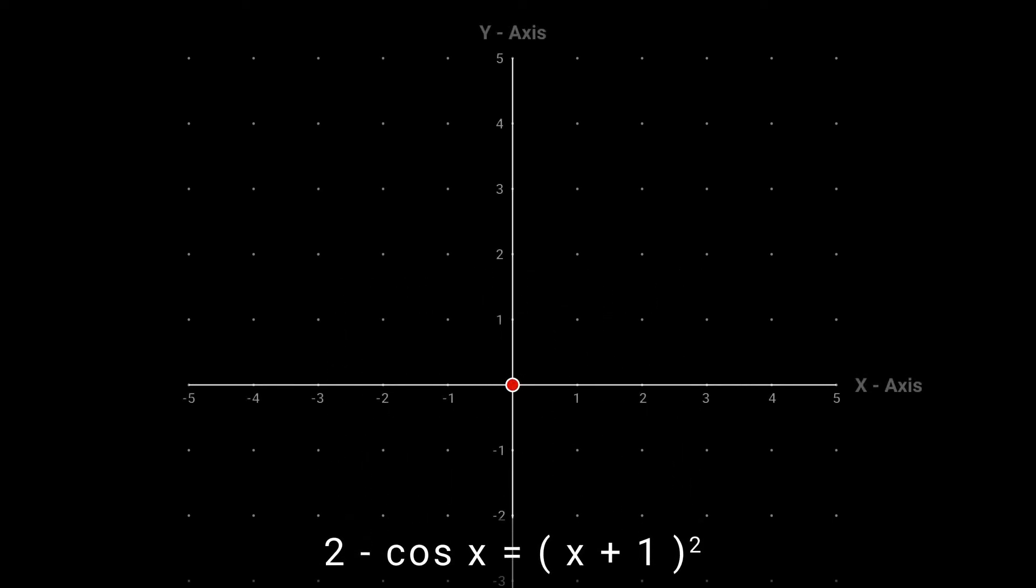Now let's try to find the total number of solutions for this equation. Now draw y equal to 2 minus cos x and y equal to x plus 1 whole square. To draw y equal to x plus 1 whole square, we have to shift the graph of y equal to x square one unit toward left.